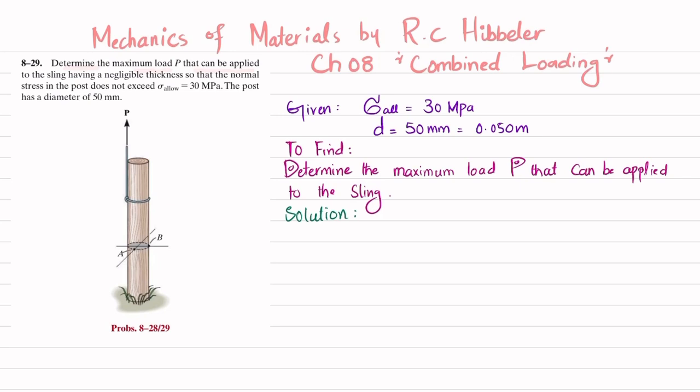The statement is determine the maximum load P that can be applied to the sling having negligible thickness so that normal stress in the post does not exceed 30 MPa. The post has a diameter of 50 mm. So you can see this is a cylindrical post having diameter of 50 mm and you have to find this P that can be applied to this sling.